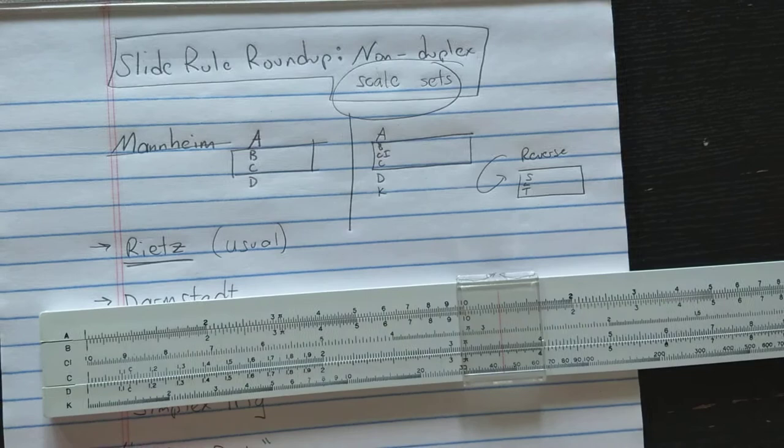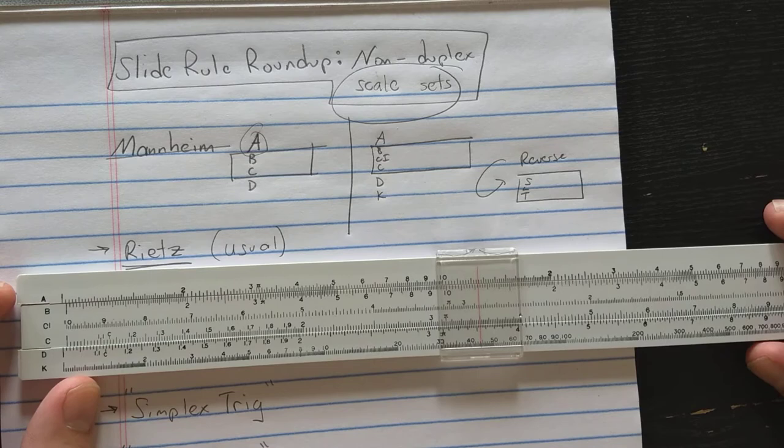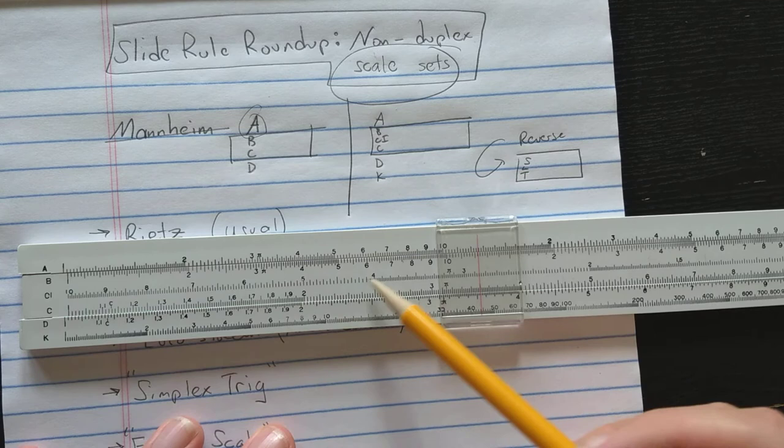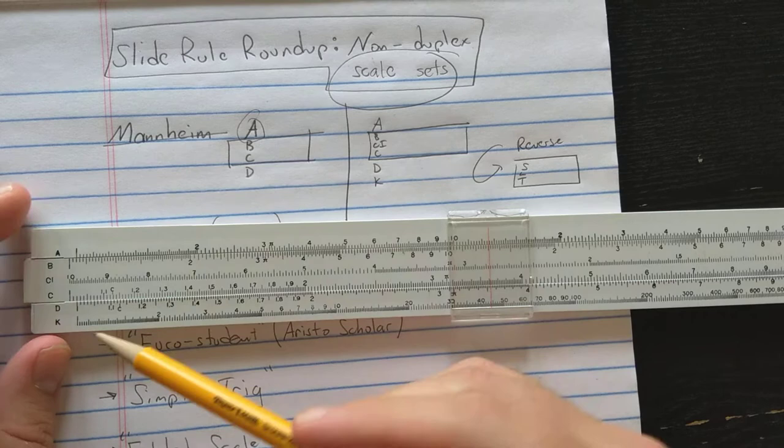Of course the A and the B scale are two decade half length scales used for squaring and square roots. However, in the 20th century most slide rules made with a Mannheim layout contain this layout. You have A, B, and C, D, but you also add CI on the slider, which is useful for combined operations.